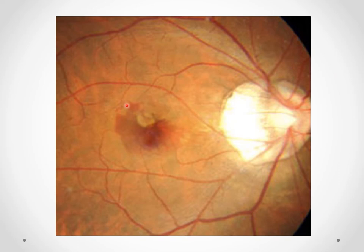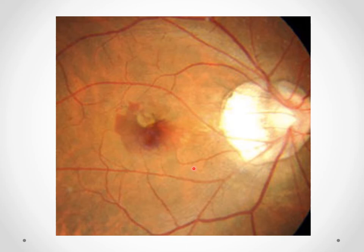Choroidal neovascular membranes (CNVMs) form when a break in Bruch's membrane allows newly formed blood vessels from the choroid to enter the sub-retinal space, creating a network of weak, leaky vessels prone to breakage and leakage of lipid, fluid, or blood. When CNVMs appear orangey-red in color, they are within or under the retina due to its transparent nature. When they appear darker — greenish or gray — they are under the RPE layer, where melanin blocks some of the color.